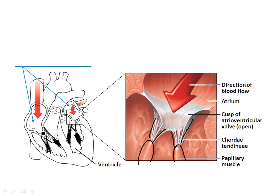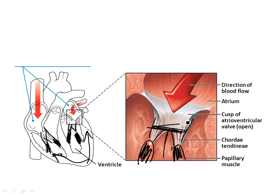When the ventricles fill, the pressure inside increases. When that pressure increases enough, the ventricles contract. They push upward, and we want that blood to flow out the aortic valve to the body and out the pulmonary valve to the lungs — not back up into the atria. Since the ventricles and papillary muscles are both made of muscle, the papillary muscles contract when the ventricles contract, pulling on the chordae tendineae and snapping the atrioventricular valves closed. So blood can't go back up into the atria.